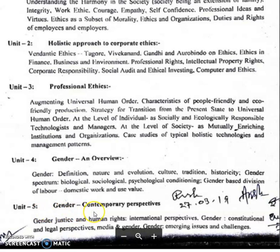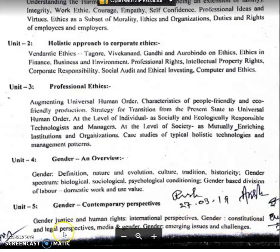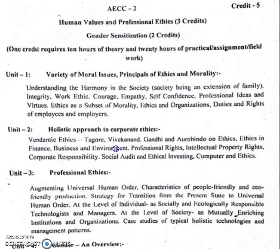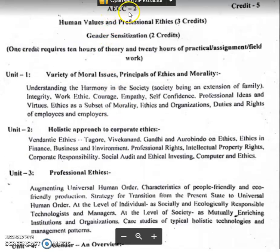Unit 5: Gender Contemporary Perspectives. Topics include: Gender Justice and Human Rights, International Perspectives, Gender Constitutional and Legal Perspectives, Media and Gender, and Gender Emerging Issues and Challenges. These 5 units you have to study in the AECC paper.